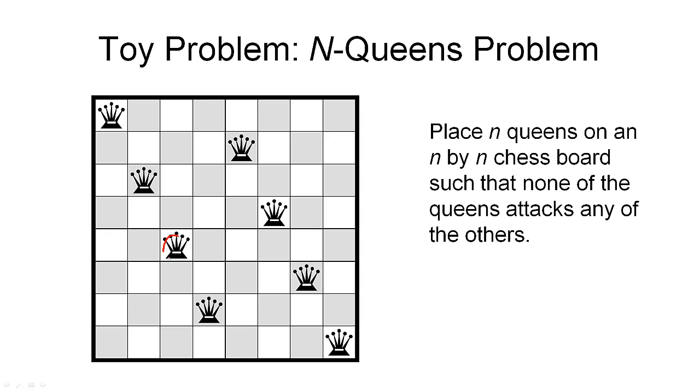So if we look, for example, at this queen here, it can move anywhere along this diagonal, or this diagonal, or it can move anywhere in its row, or anywhere in this column.